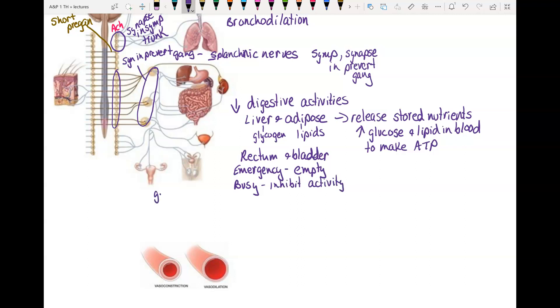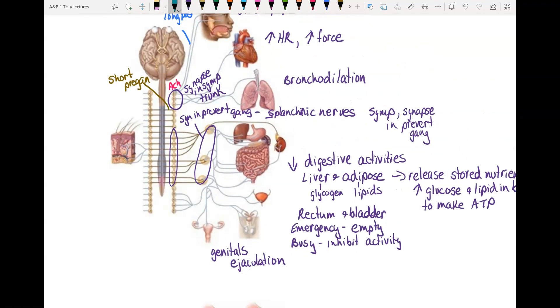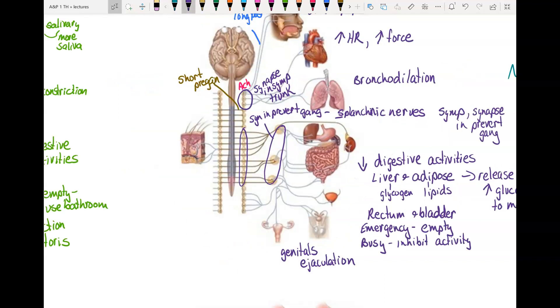And then with the genitals, we get ejaculation. All of these are going to be norepinephrine. So everything over here, we're secreting norepinephrine onto the effector.